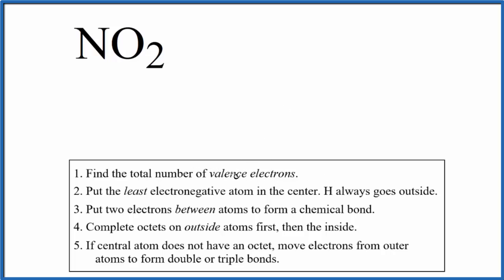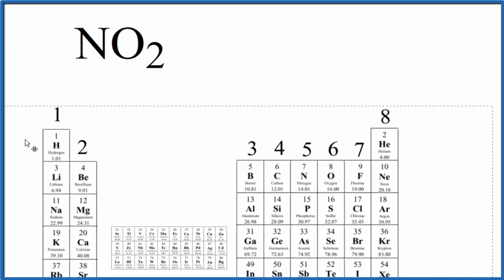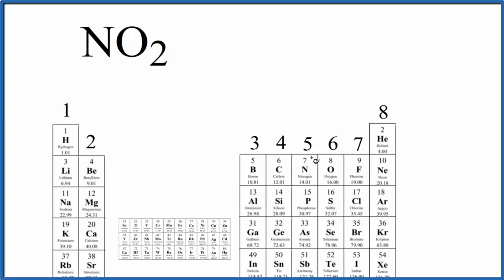First off, for Lewis structures, we find the total number of valence electrons for the molecule. In the periodic table, that makes it a lot easier to do. If we find nitrogen right here, group 15, sometimes called 5A, that has 5 valence electrons.